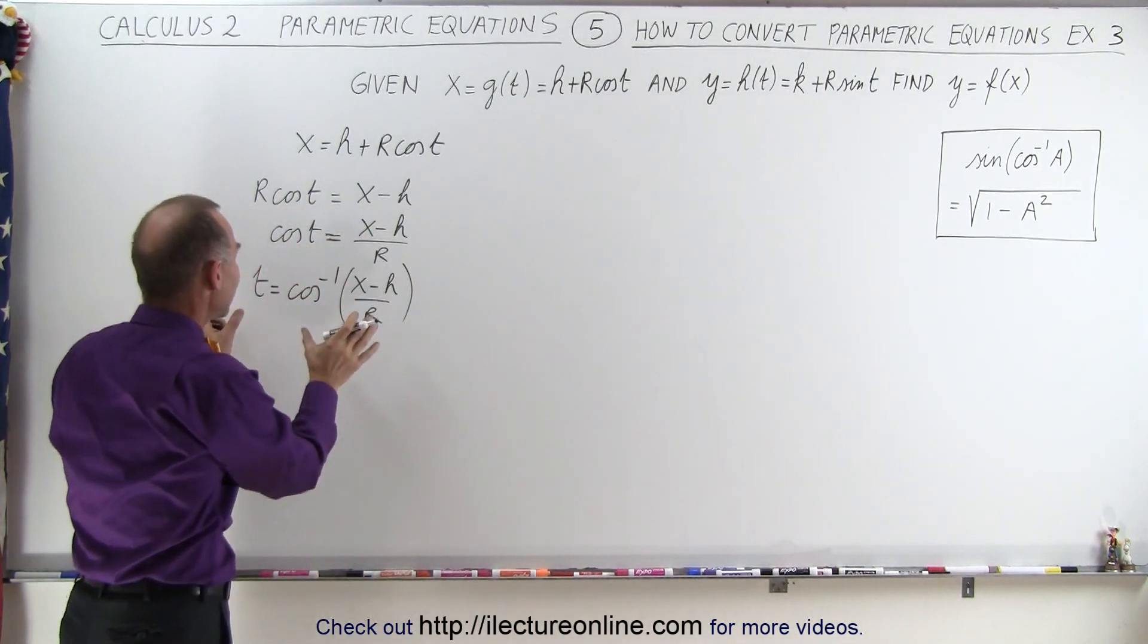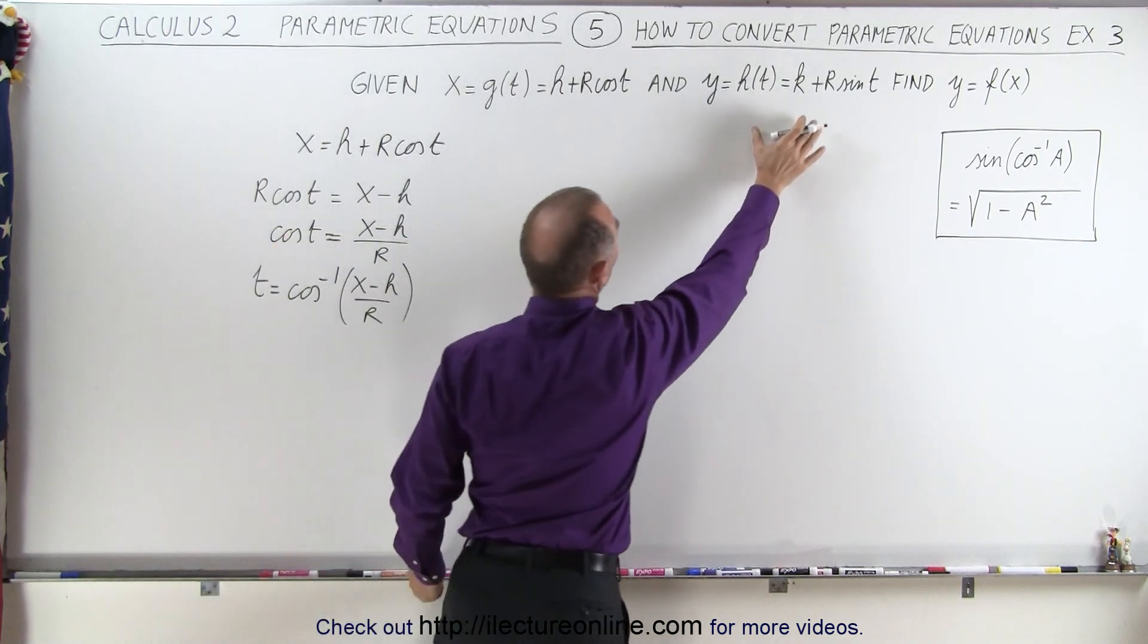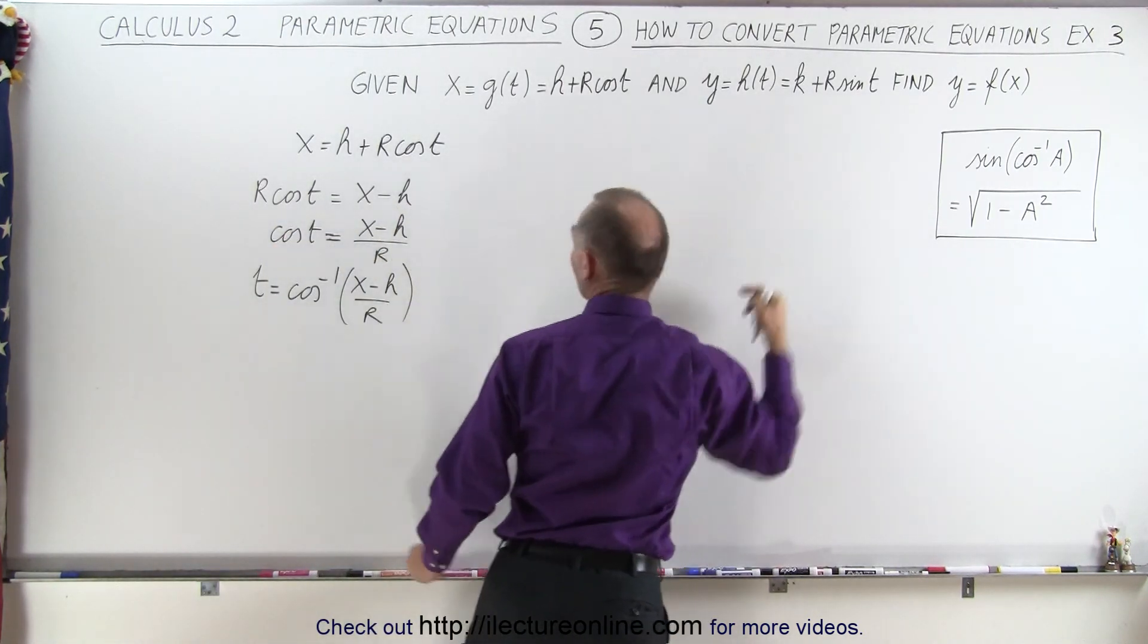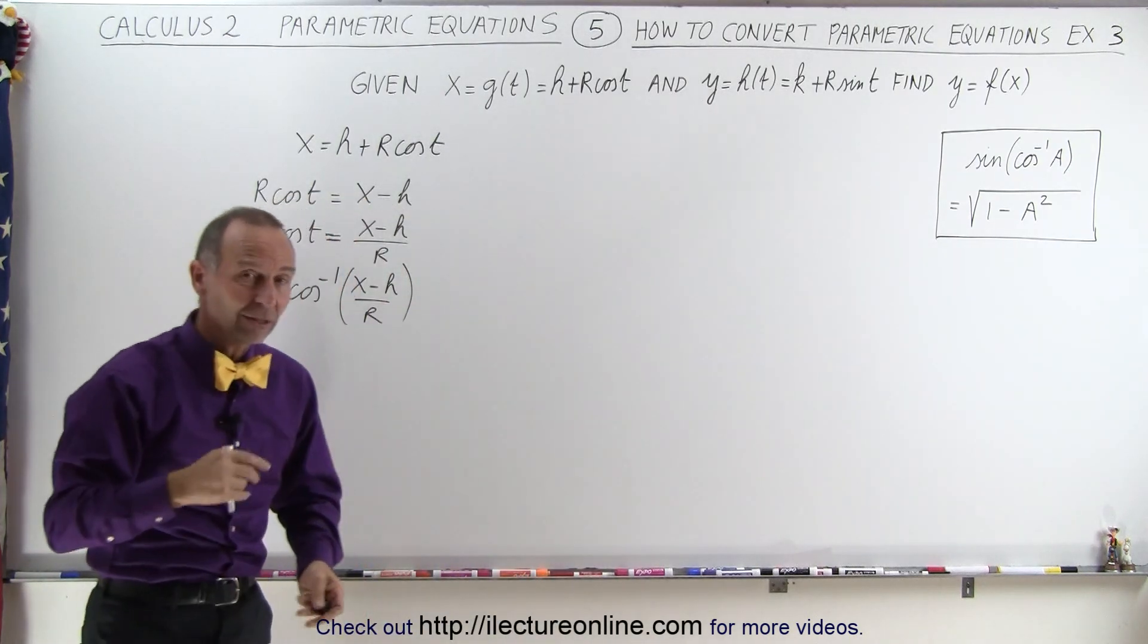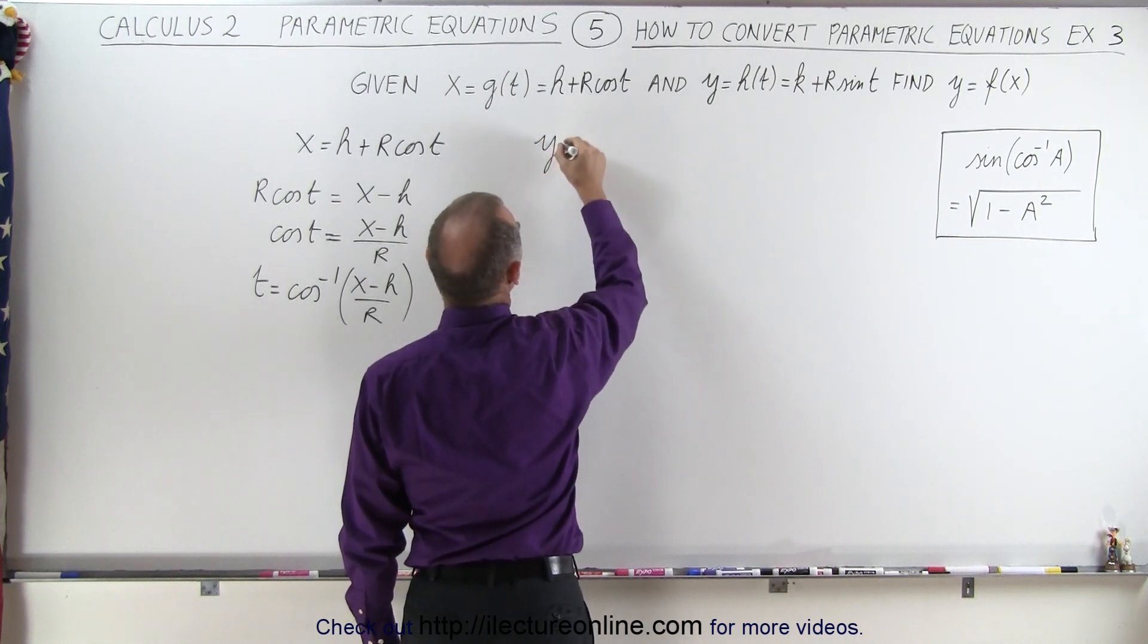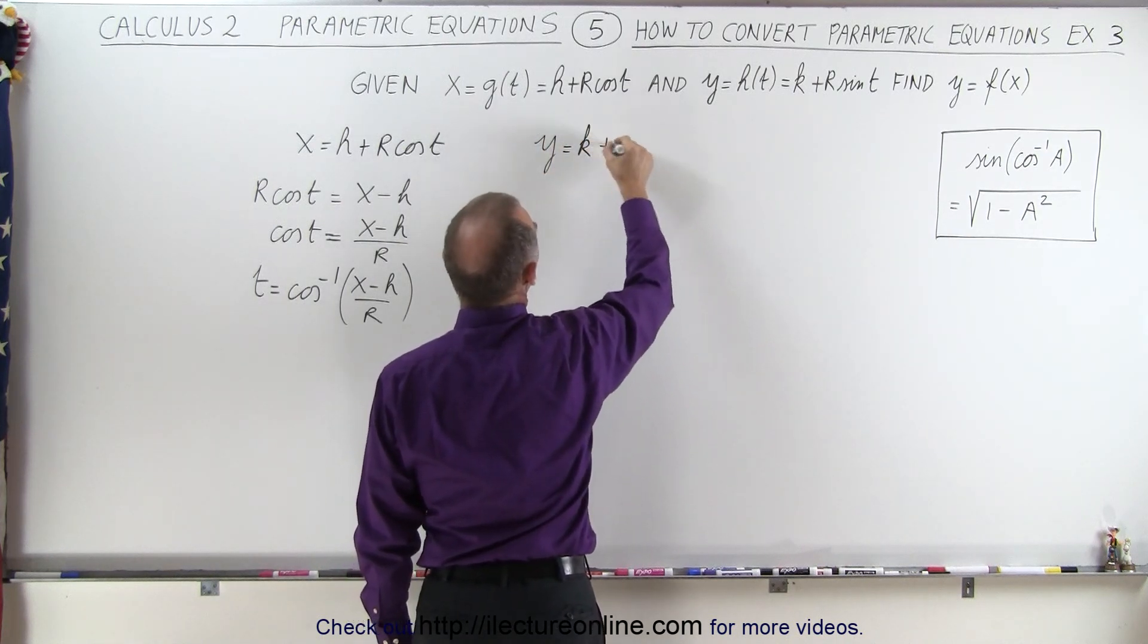We're going to need that when we take this and plug that into our second parametric equation. So instead of T, we're going to replace T by what T is equal to based upon what we found in our first equation. So there we're going to write that Y is equal to K plus R.